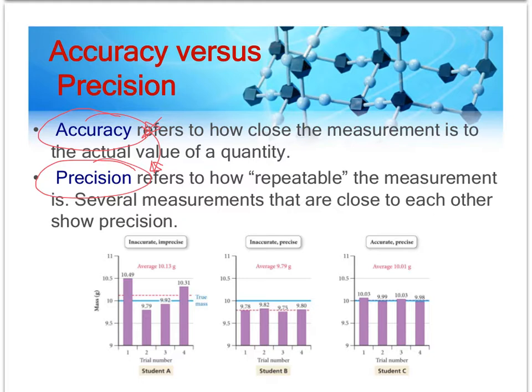Accuracy is how close a value is to what it's supposed to be. Precision is how repeatable the value is. Accuracy means close; precision means repeatable.